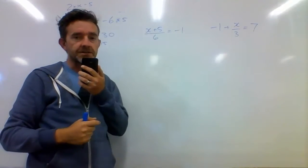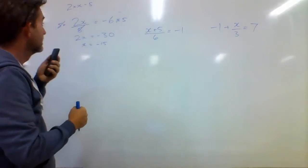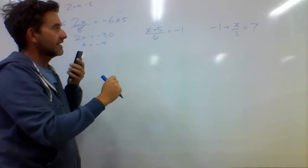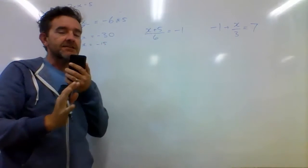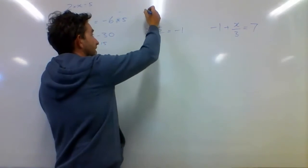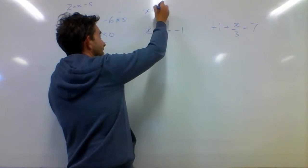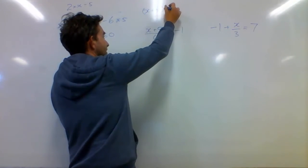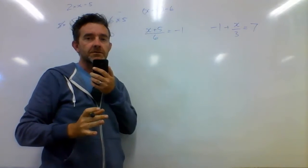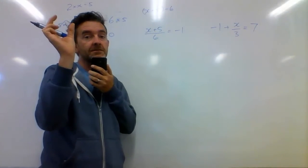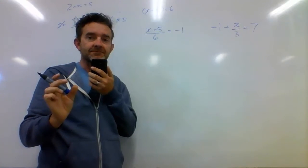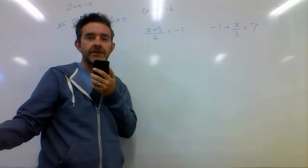In the second question I've got here, it's slightly different. The first one had a multiplication at the top — this one's got an addition. Now, if I were to write this out, I would write it as x plus 5 in brackets divided by 6. The reason I would do that is because the things happening above the division bar are happening before the division. So if I were to write it out longhand, I would write it like that.